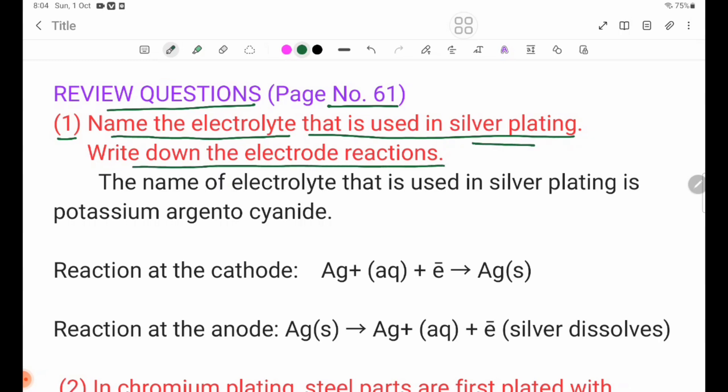Silver plating. Now write down the electrode reactions. The name of electrolyte that is used in silver plating is potassium argentocyanide. So, the silver plating is electrolyte.